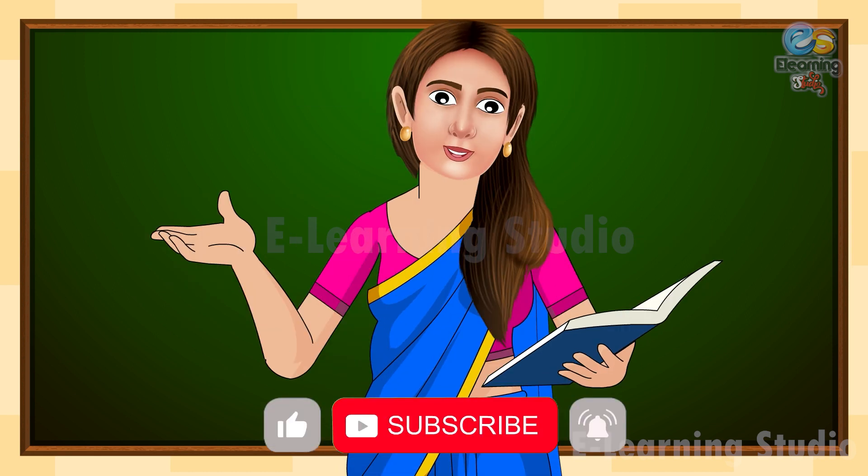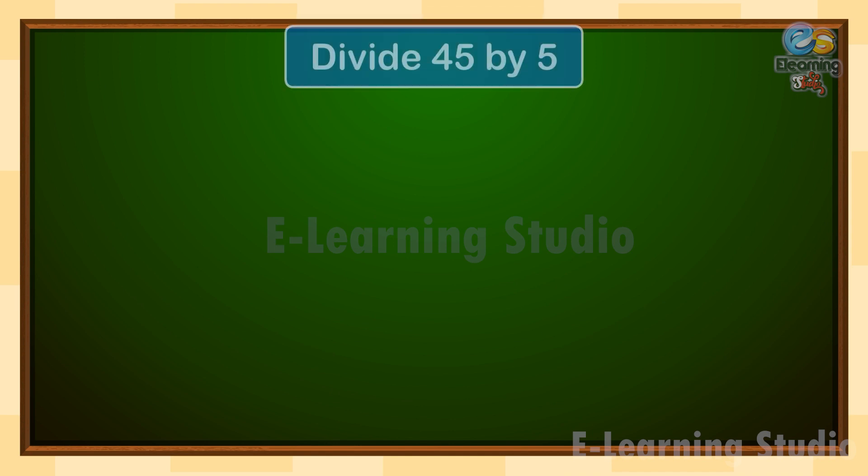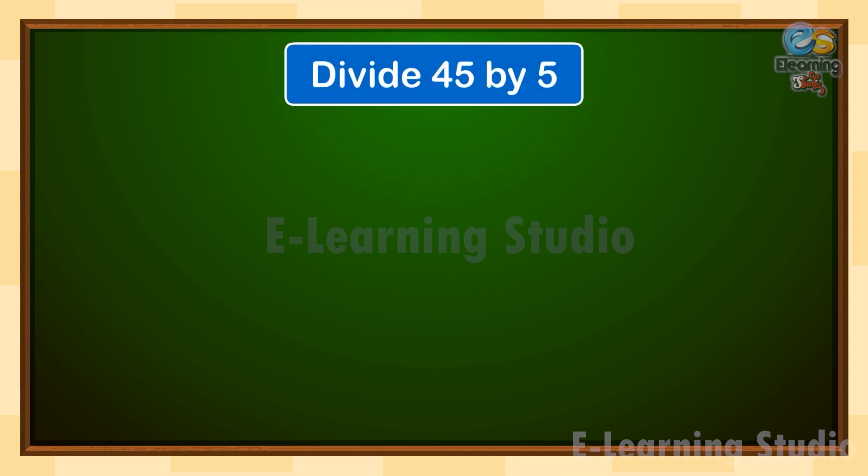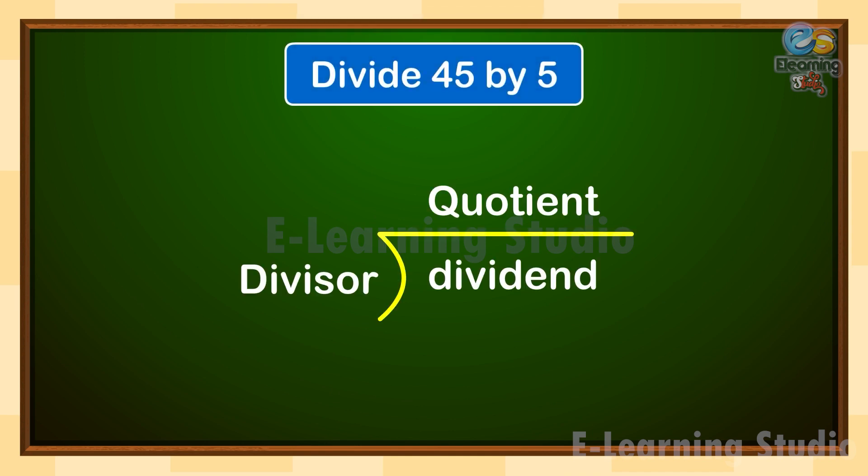Let us understand with the help of another example. Let us divide 45 by 5. First, put 45 in the dividend position and 5 in the divisor position.